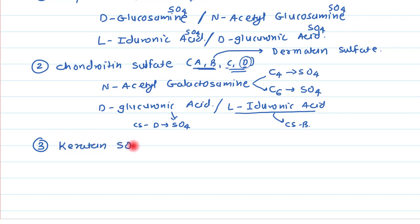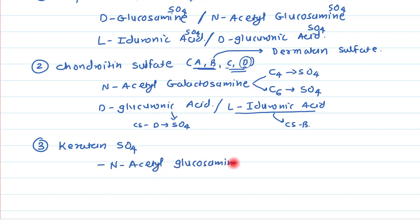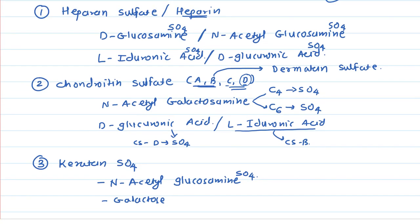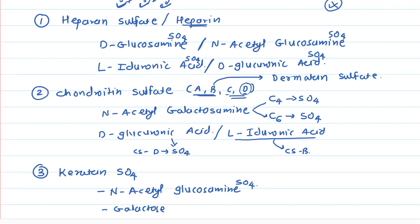Now let's consider keratan sulfate. Keratan sulfate is also a polymer of repeating disaccharide units. The disaccharide is made up of N-acetylglucosamine and galactose. Importantly, in keratan sulfate there is no uronic acid derivative. The N-acetylglucosamine contains a sulfate group.